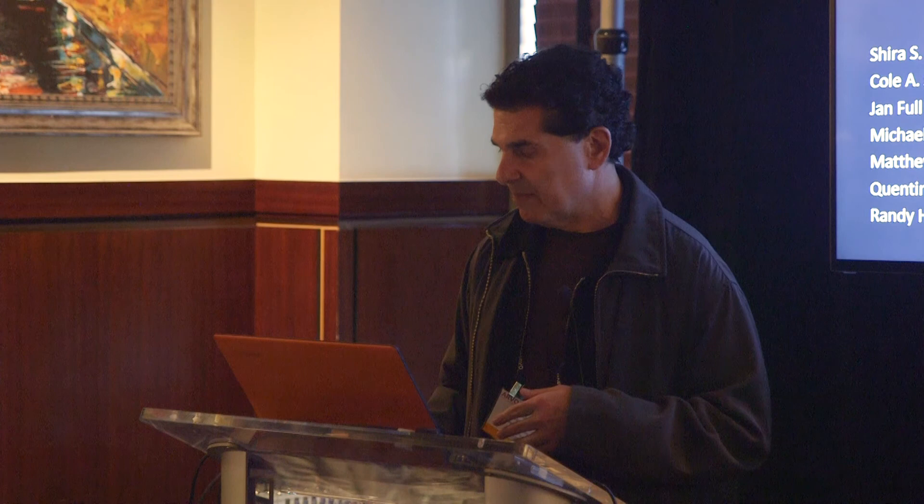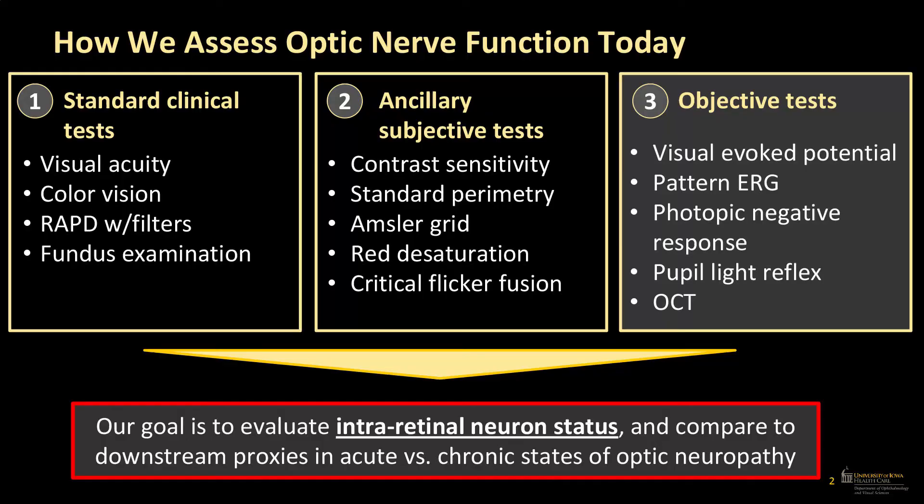I'm mainly going to present the preliminary results of the photopic negative response and the pupil response in these patients. Standard clinical tests are on one side, ancillary tests we often use in the neuro-ophthalmology clinic on the other, and on the right are the objective tests at our disposal to understand how much of the retina — and which layer — is involved in different optic nerve diseases. Our goal was to evaluate intraretinal neuron status and compare that to downstream proxies of the state of optic neuropathy.